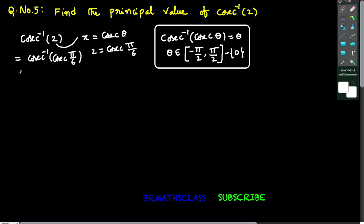Now you observe it is of the form cosecant inverse of cosecant theta. Cosecant inverse of cosecant theta is theta. This formula holds good when theta belongs to this interval. Pi by 6 means 30 degrees — is 30 degrees in the interval minus 90 to plus 90 except 0? Yes, 30 degrees is there. So cosecant inverse of cosecant theta equals theta, and this formula holds good here. So this equals pi by 6. The principal value of cosecant inverse of 2 is pi by 6.